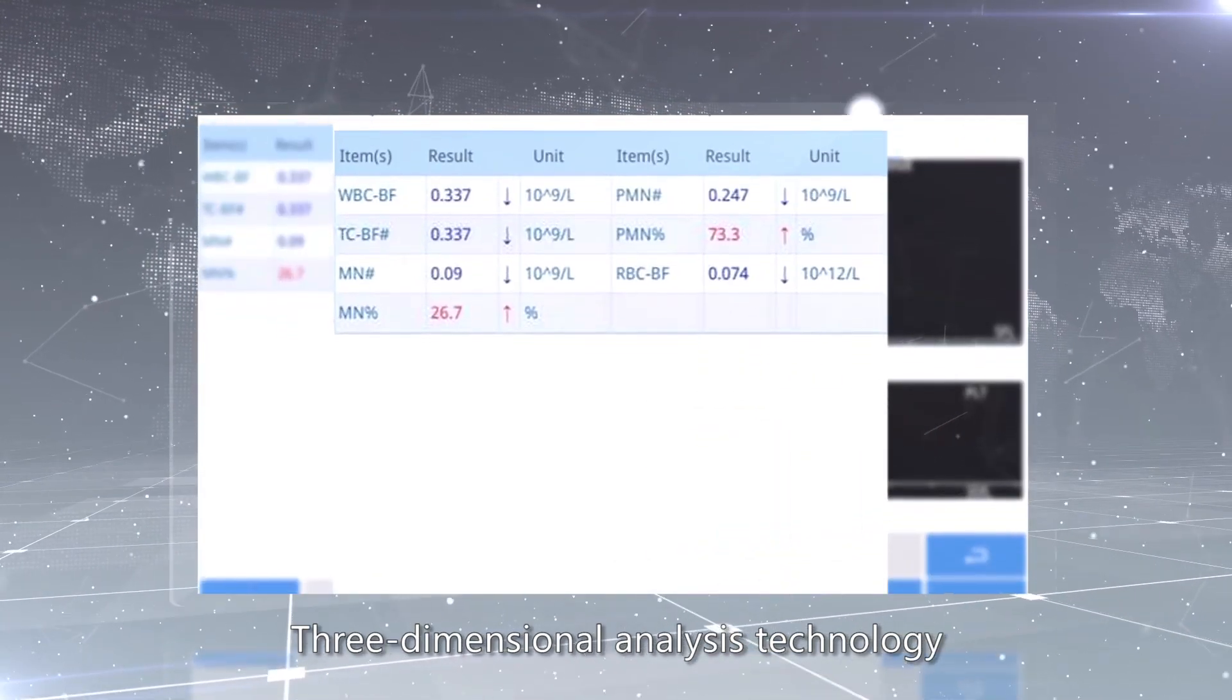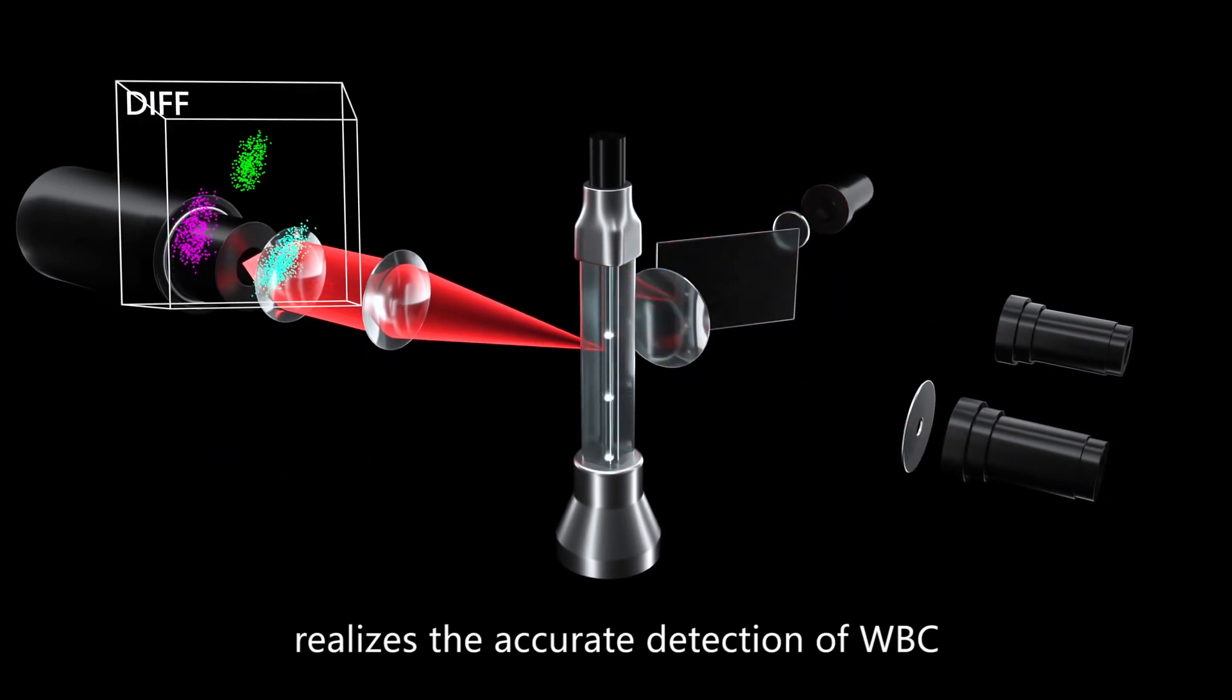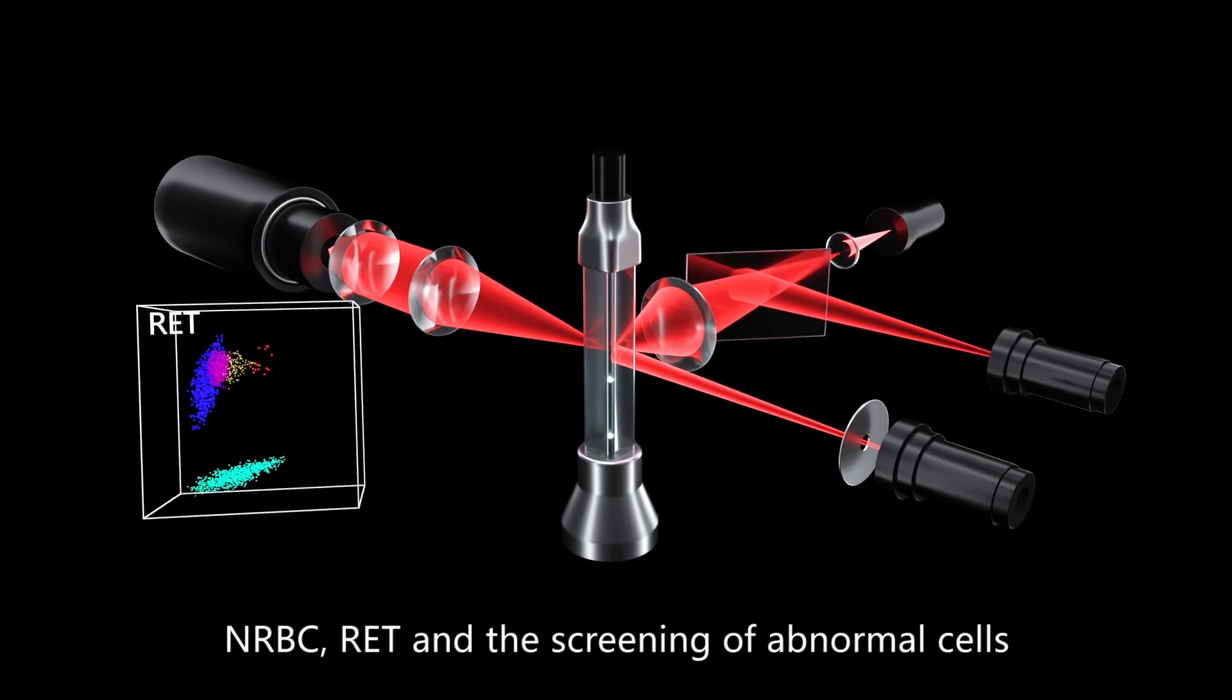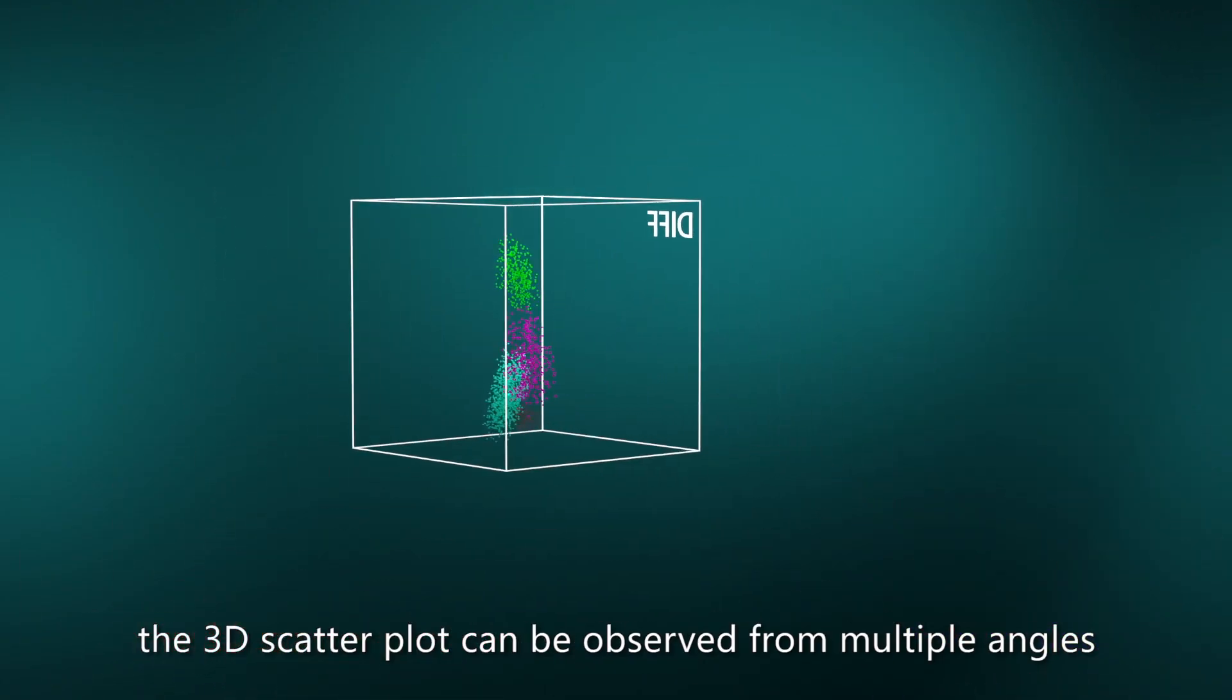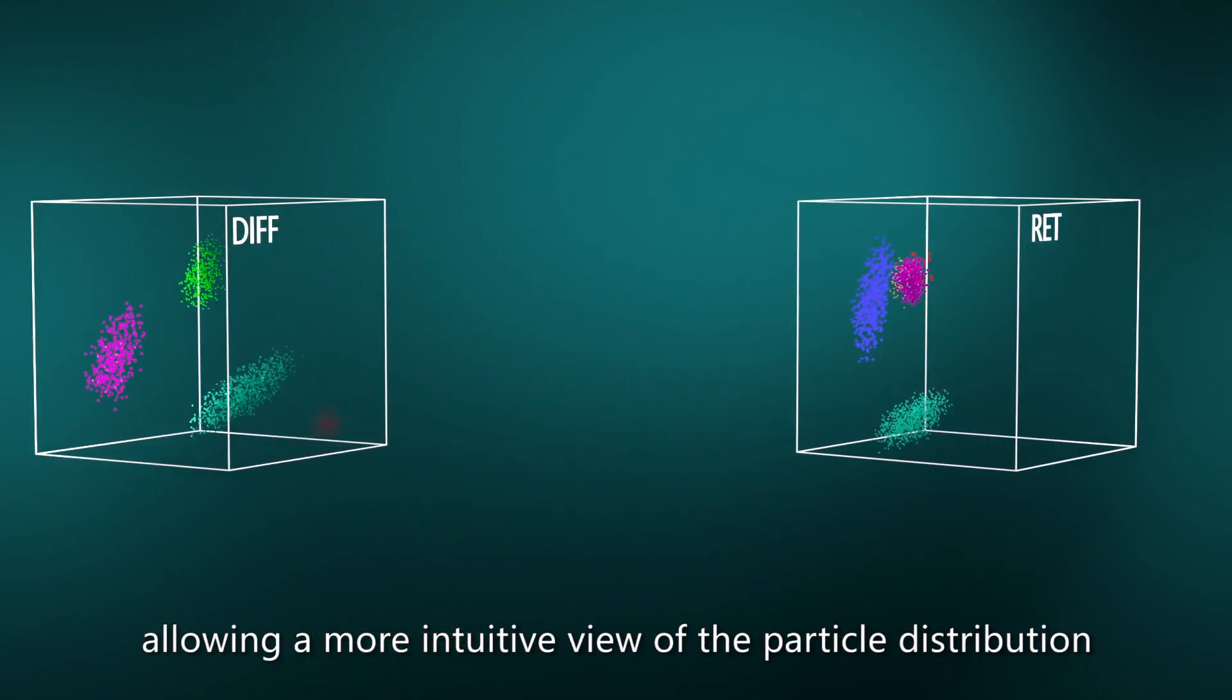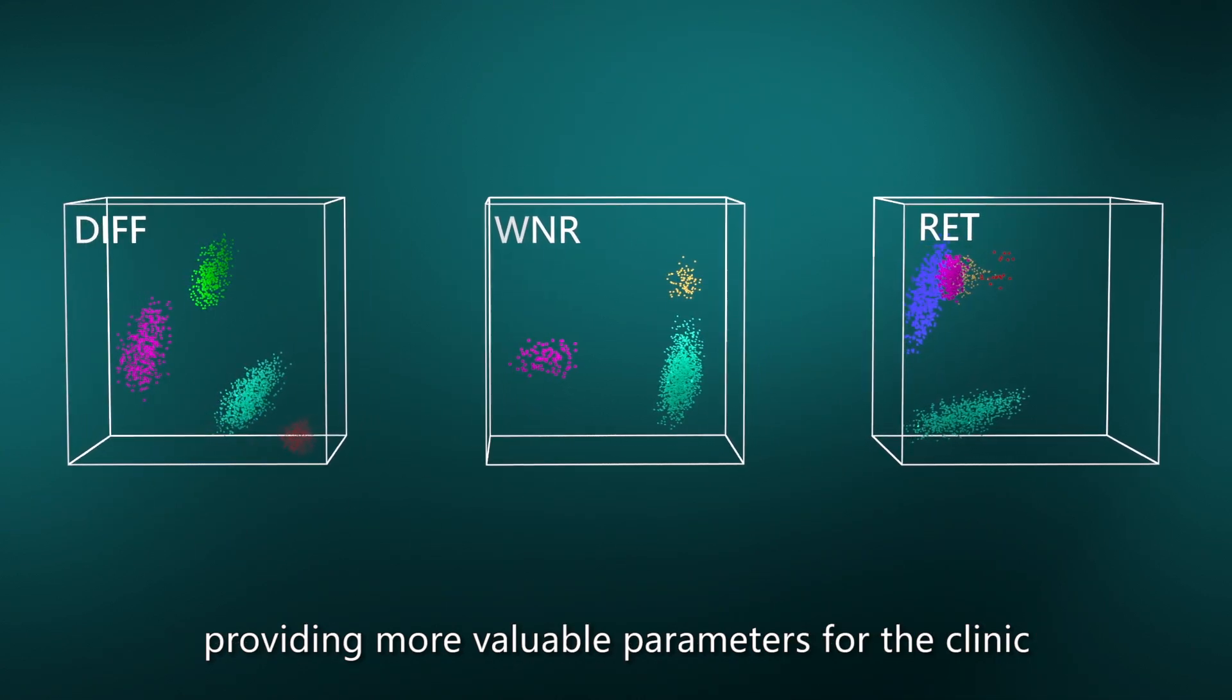Three-dimensional analysis technology realizes the accurate detection of WBC, N-RBC, RET, and the screening of abnormal cells. In addition, three-dimensional scatter plot can be observed from multiple angles, allowing a more intuitive view of the particle distribution, providing more valuable parameters for the clinic.